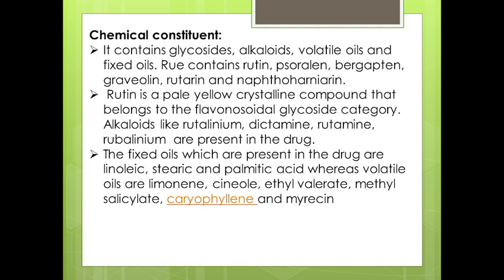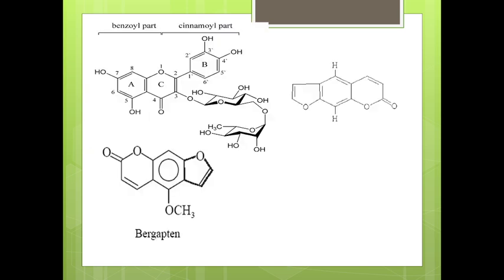These are the different uses and traditional uses of Ruta. The chemical constituent rutin is present in abundance in this drug. In its structure, there is a benzoyl part and a cinnamoyl part, with hydroxyl groups attached to the A and B rings, and an attachment at the third position.